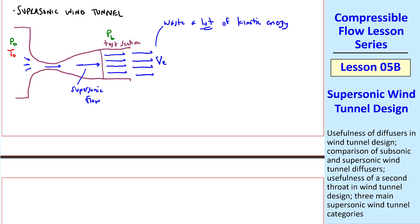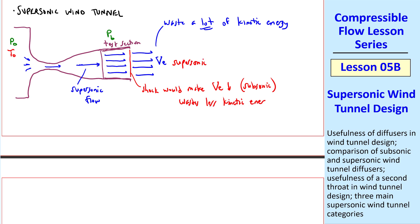Not to mention it would be very noisy. One way around this is to have your test section diverge a little bit and tune it so that you have a shock at the exit plane. The shock would make V_E go down — in fact subsonic instead of supersonic — which would waste less kinetic energy. But you also have large losses across the shock, and this shock would be fairly strong since it's at a Mach number like 2.